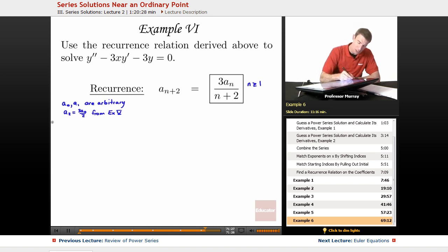Now the recurrence relation is going to kick in. I'm going to start out by plugging in different values of n, starting at n equals 1 because that was the first value for which my recurrence relation is valid. When I plug in n equals 1, I get A3 equals 3A1 over 3, which simplifies down to A1.